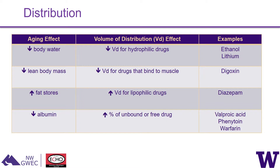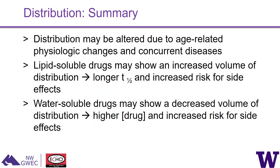Distribution is more complicated. With aging, there's a decrease in total body water, reducing the volume of distribution for hydrophilic drugs like ethanol and lithium. There's also a decrease in lean body mass, reducing volume of distribution for drugs that bind to muscle like digoxin. Additionally, increased fat stores raise the volume of distribution for lipophilic drugs like diazepam. Decreased albumin means more unbound drug in circulation, able to exert pharmacologic effect.